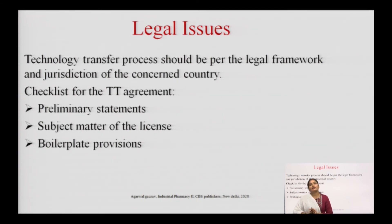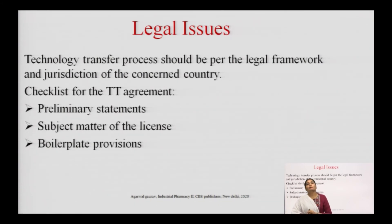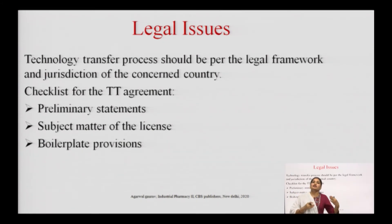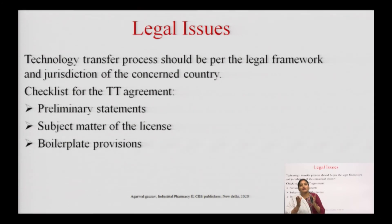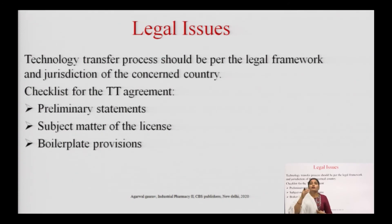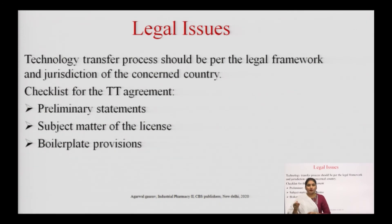The checklist for a technology transfer agreement should include a preliminary statement, the subject matter of the license, and boilerplate provisions. The preliminary statement covers information required before starting the process, and the subject matter describes to whom the license is related and on which matter the license is prepared.